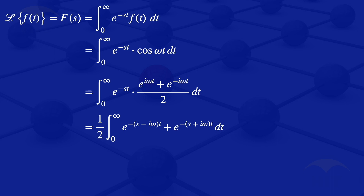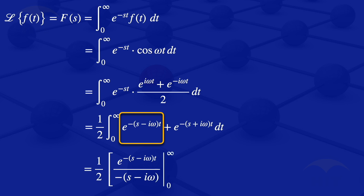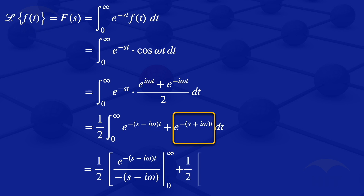We now integrate each part. Integrating the first term gives e to the minus s minus i omega t divided by minus s minus i omega, so the first part evaluated with limits 0 to infinity is one half times e to the minus s minus i omega t divided by minus s minus i omega. Integrating the second term gives plus one half times e to the minus s plus i omega t divided by minus s plus i omega, evaluated from 0 to infinity.